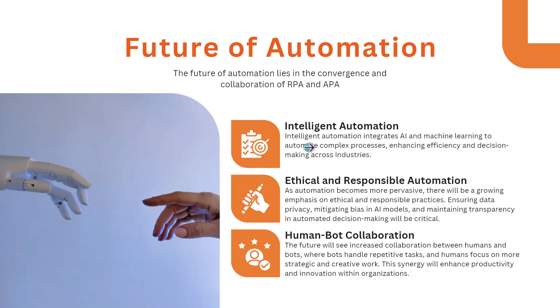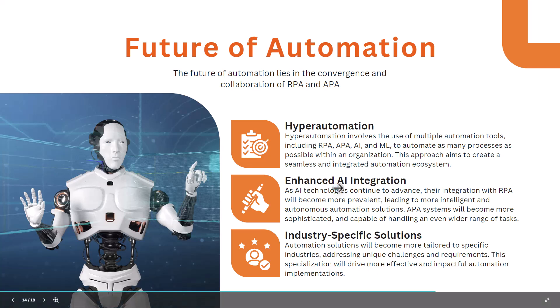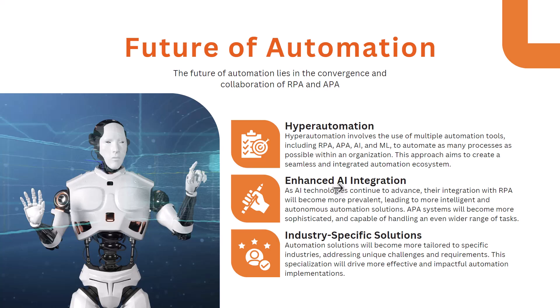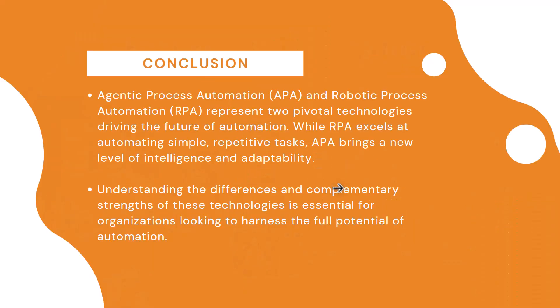Other future trends include ethical and responsible automation, which can be achieved with a combination of RPA and APA, as well as human-bot collaboration. Hyper automation will involve RPA, APA, AI, and ML to automate many end-to-end processes within an organization — not limited to just rule-based repetitive work. Enhanced AI integration and industry-specific solutions are a few more examples we can build by combining these technologies.